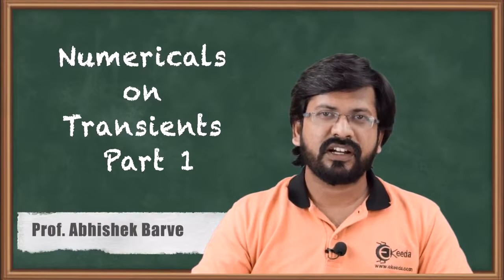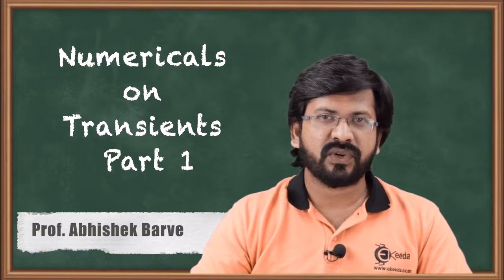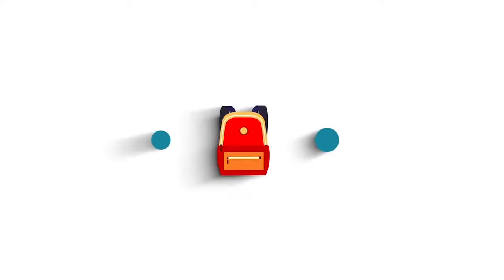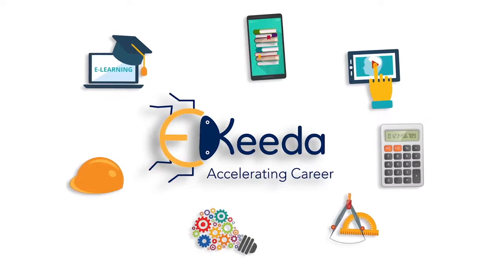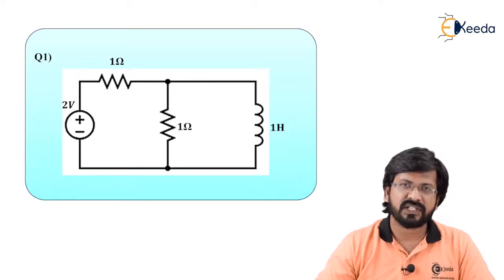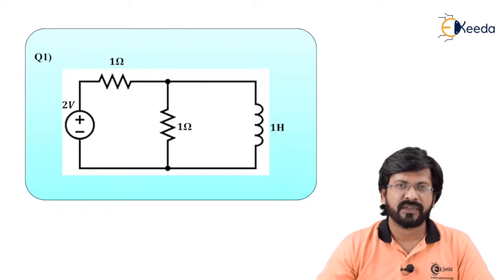Hello friends, in this video we will learn numericals based on transient analysis. To solve real numericals, first we should understand how to do tau calculations — that is, time constant calculations for given networks. We will be concentrating on RL circuits and RC circuits, because only in these circuits tau can be calculated. Tau equals L by R for RL circuits and R times C for RC circuits.